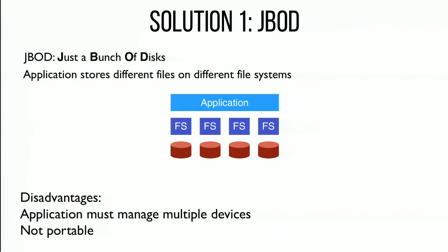With JBOD, the idea is we have a different file system mounted on each disk, and the application knows which file system to use based on the directory structure. For example, /temp on one disk, the home directory on another, experimental data on another — all with different file names to direct access. This works, but it's not the most elegant solution and doesn't port well when you have different numbers or sets of disks.